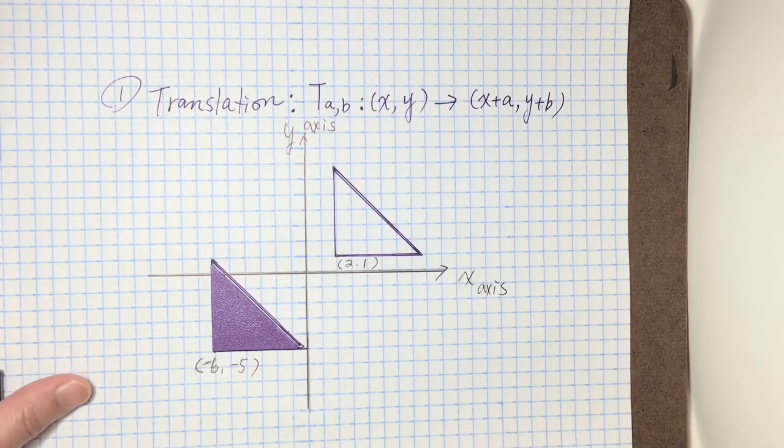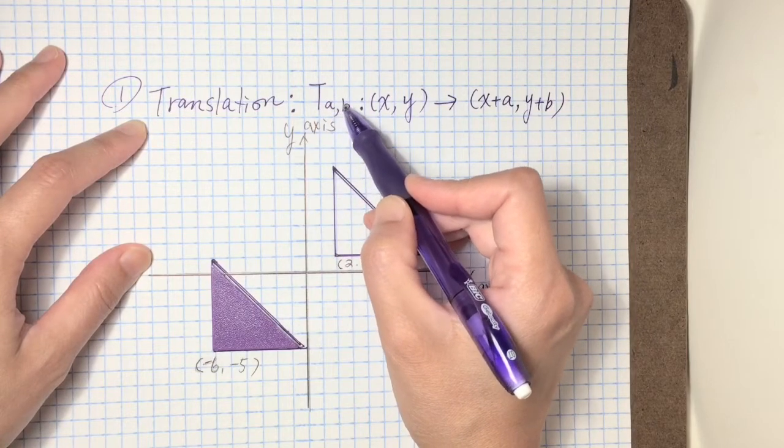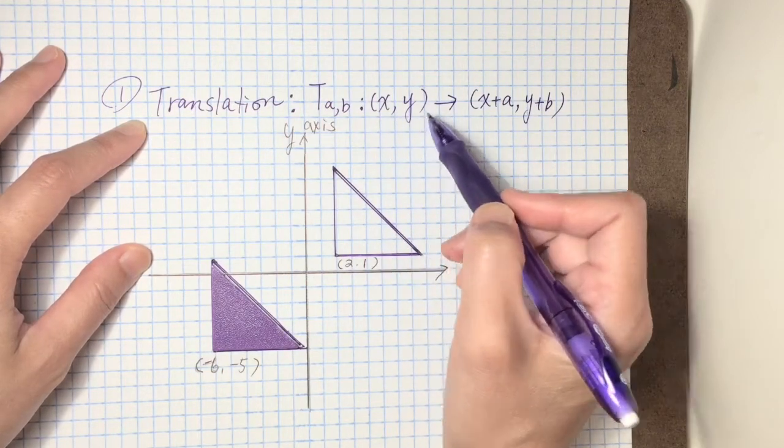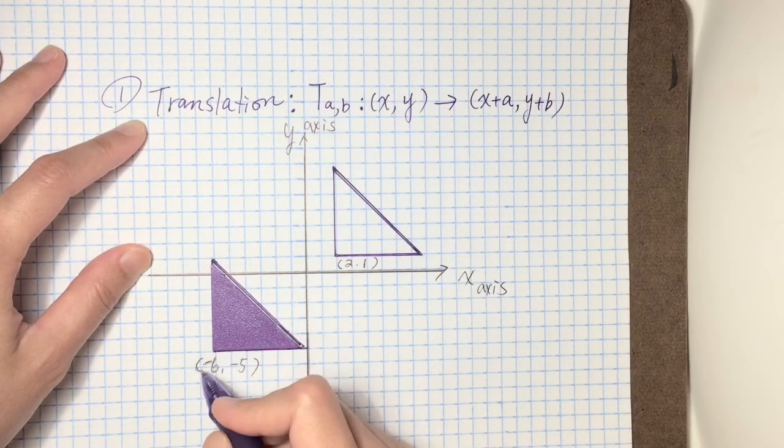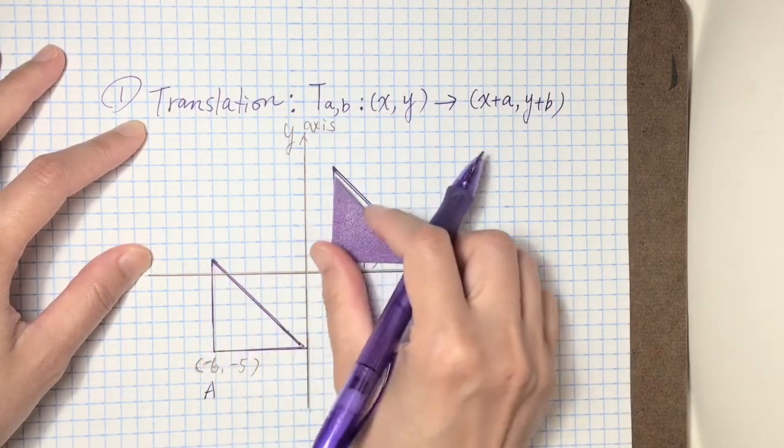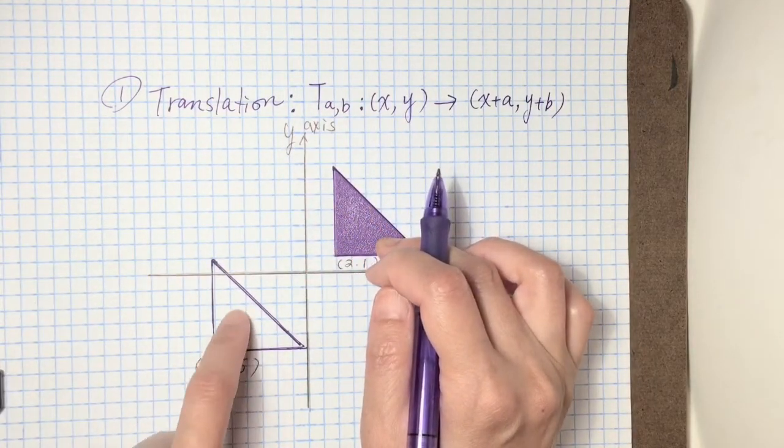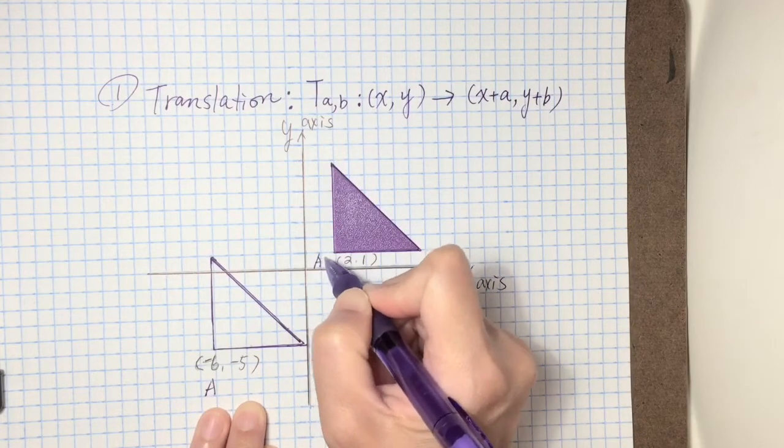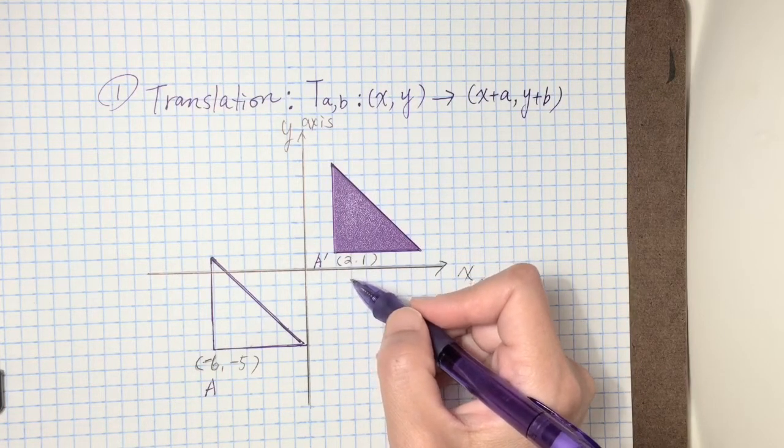Next let's talk about the example for each transformation. Translation, we use capital T subscript A and B to A, already known the fixed point xy. For example, just like this image, negative six, negative five, this point.